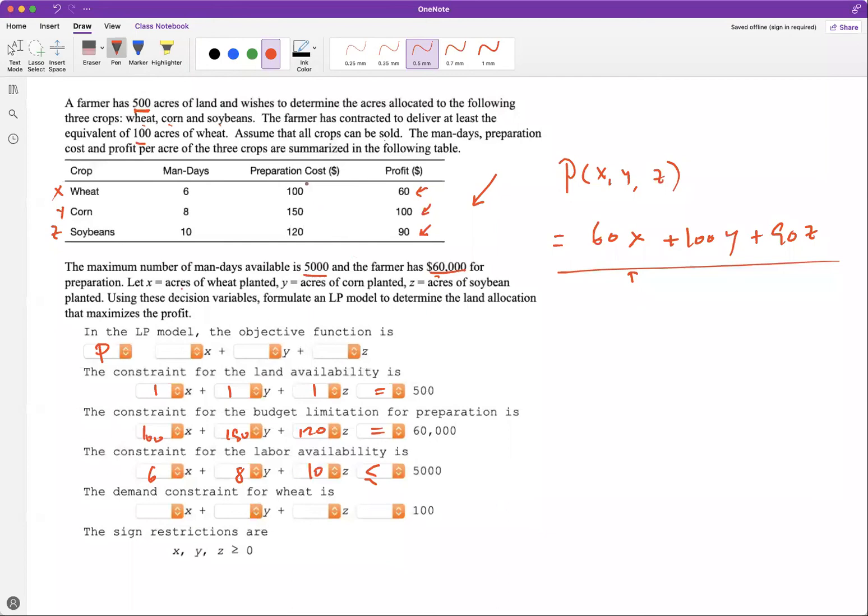And the demand constraint for wheat: it has to be at least 100 acres. So that means for wheat, this is 1X plus 0Y plus 0Z, and this has to be greater than or equal to 100. So this is all we need to do for this linear programming question.